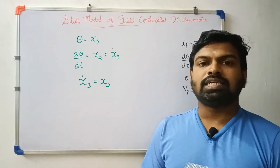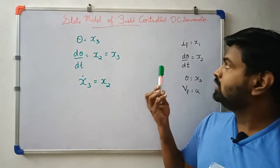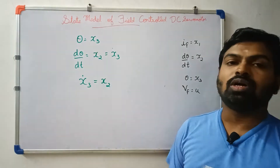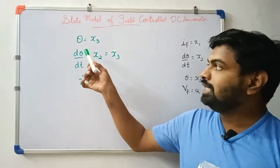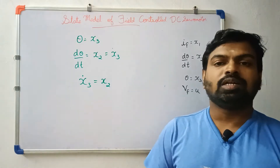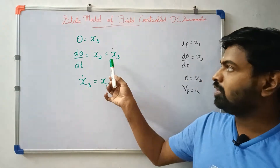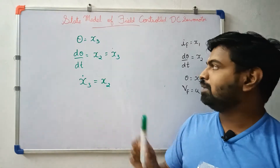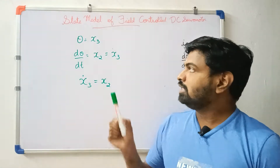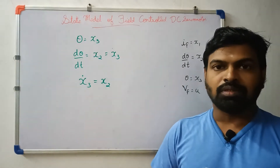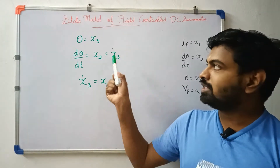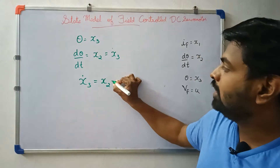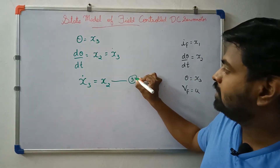Now we have x3_dot. x3 is assigned as the third state variable, where theta equals x3. So x3_dot is assigned to x2. Solving the third equation gives: x3_dot = x2.